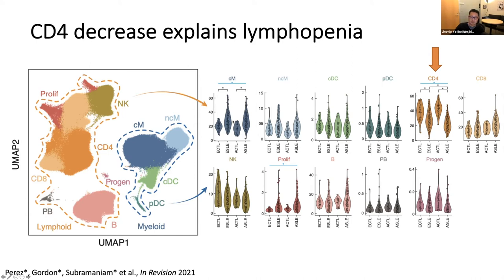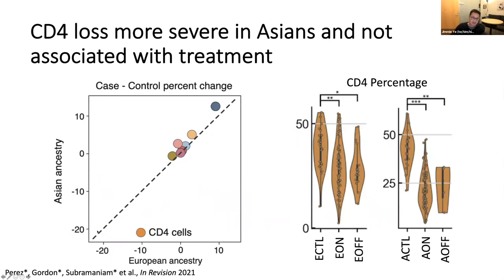Single cell sequencing is unbiased, and we can now start asking questions about exactly which populations within circulation are depleted in lupus patients. What we notice is that it's really a drop in CD4-positive T cells — specifically a drop in the frequency of naive CD4s in lupus patients. This is even more significant in East Asian patients, with about a 20% reduction compared to about a 10% reduction in European ancestry patients.